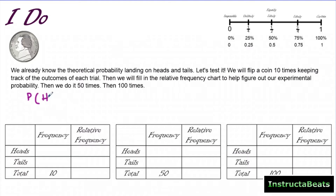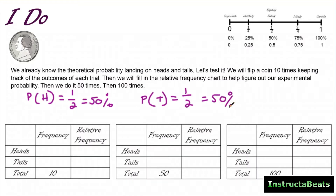So first, let's write that down. The theoretical probability of landing on heads is one-half, or 50%, and the theoretical probability of landing on tails is also one out of two. If we flip the coin twice, we expect it to land on tails once. If we flip it 50 times, we expect it to land on tails 25 times. If we flip it a million times, we expect it to land on tails 500,000 times. We're going to flip the coin 10 times, keeping track of outcomes of each trial using a relative frequency chart. Then we'll compare our experimental probability to our theoretical probability — what actually happened versus what we thought was going to happen.